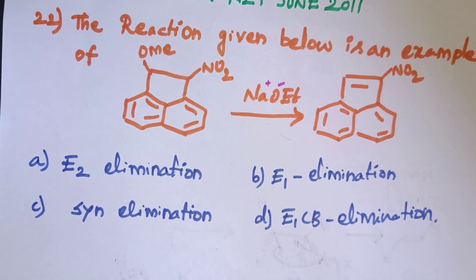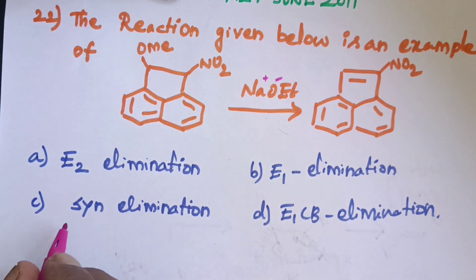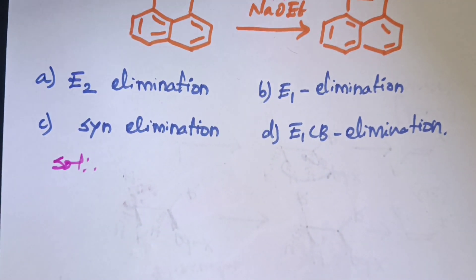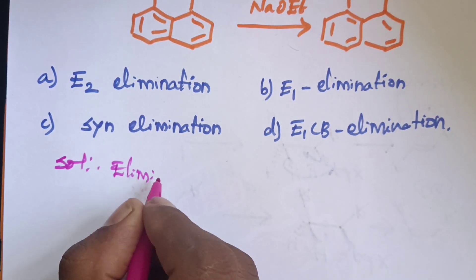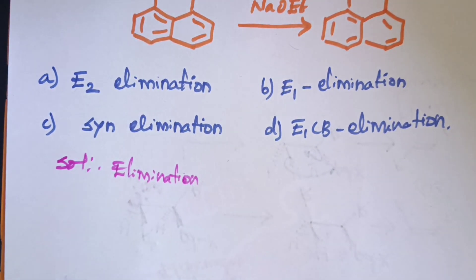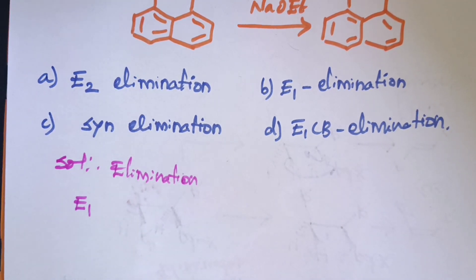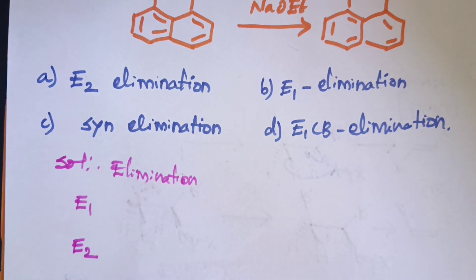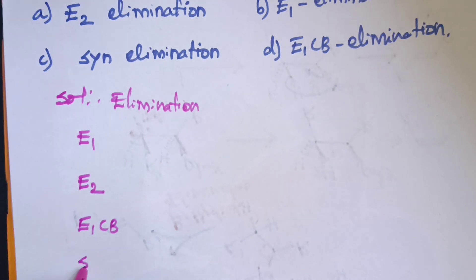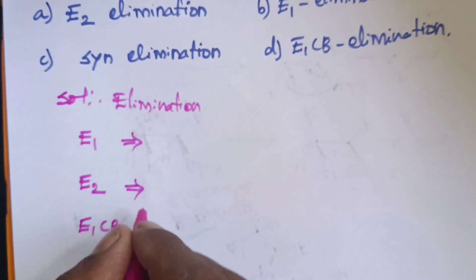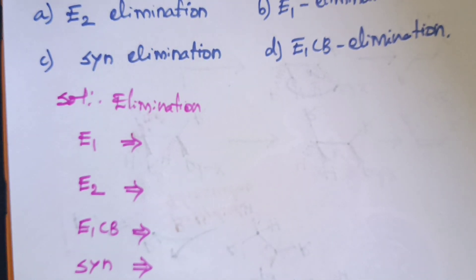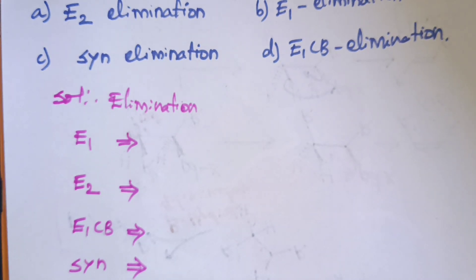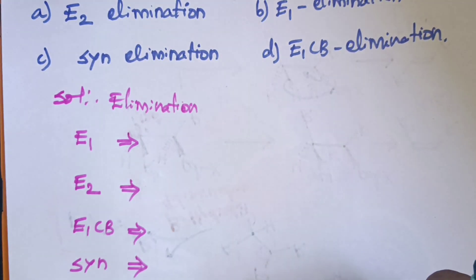We are talking about what type of elimination to follow. Let's go to the direct solution. First, E1 elimination: the leaving group eliminates, a positive charge (carbocation) is generated, and then a base abstracts a proton — alkene forms. That is the E1 elimination reaction.